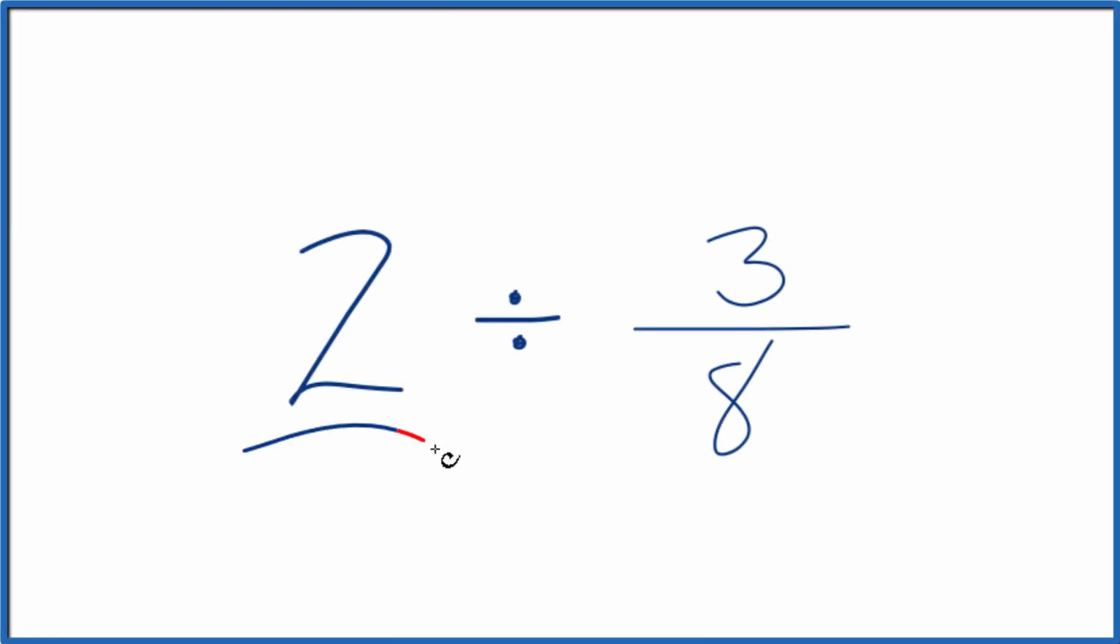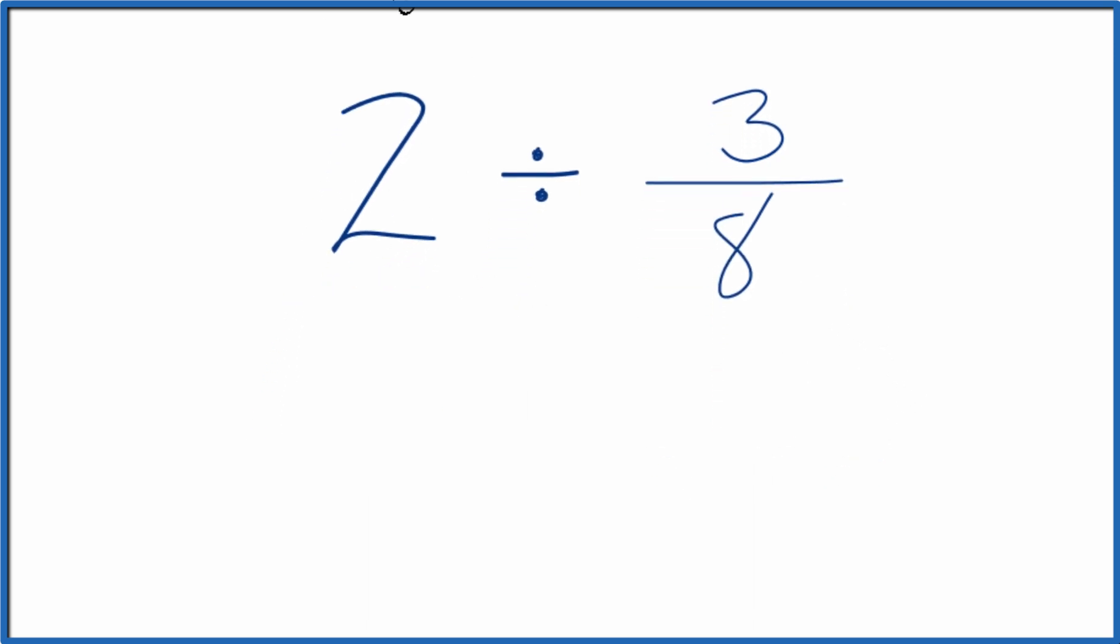In this video, we're going to divide 2 by 3 eighths, and here's how you can do that. Instead of 2, let's call this 2 over 1, because 2 divided by 1 is still 2, but now we have a fraction.